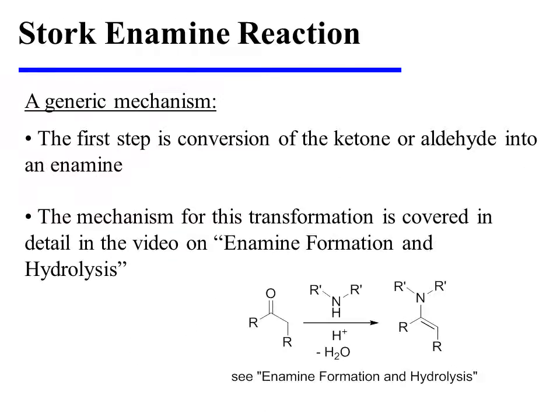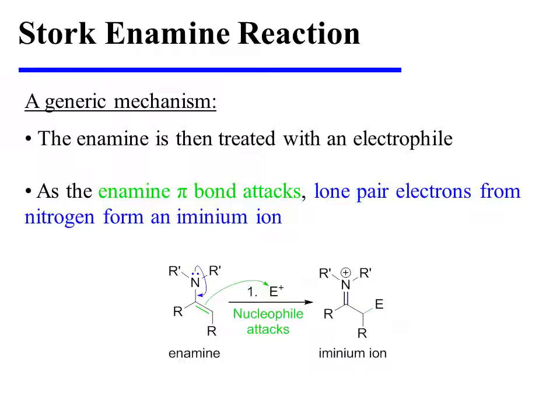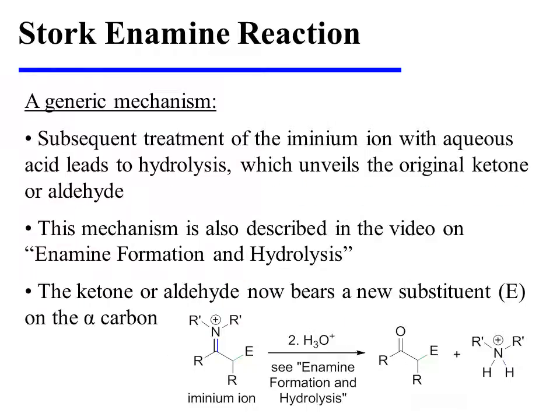The first step of the reaction is the conversion of the ketone or aldehyde into the enamine, and the mechanism for this transformation is covered in detail in the video on enamine formation and hydrolysis. The enamine is then treated with an electrophile, and as the enamine pi bond attacks that electrophile, nitrogen's lone pair electrons form an aminium ion. Subsequent treatment of the aminium ion with aqueous acid leads to hydrolysis, which unveils the original ketone or aldehyde. The mechanism for this process is also described in the video on enamine formation and hydrolysis.